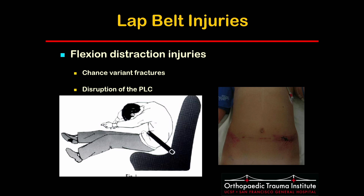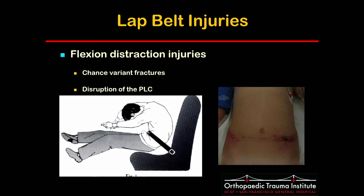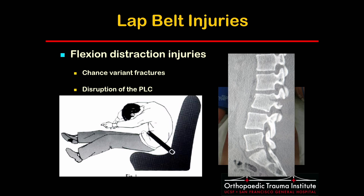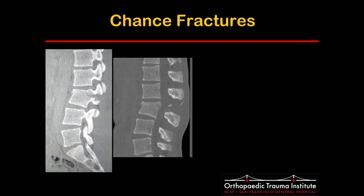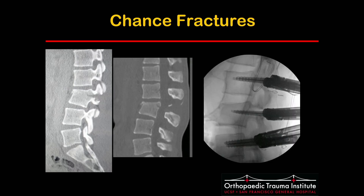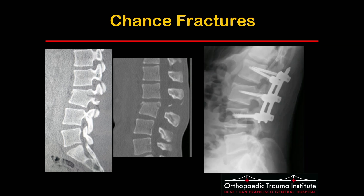Lap belt injuries or flexion-distraction injuries are also quite common in the pediatric population and result from disruption of the posterior ligamentous complex. You also need to evaluate for intra-abdominal injuries due to the high association between the two. These injuries could be mostly osseous, in which case you could often treat them in a hyperextension brace conservatively, or they could be primarily ligamentous, in which case I tend to treat them operatively. Here is a 15-year-old with a flexion-distraction injury treated percutaneously one level above and one level below, with hardware removable after nine months to a year if solid bony healing occurs.